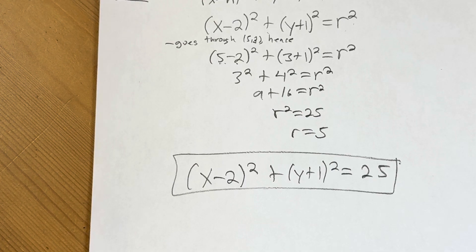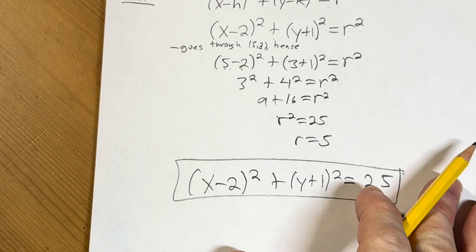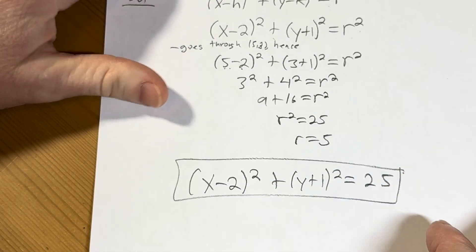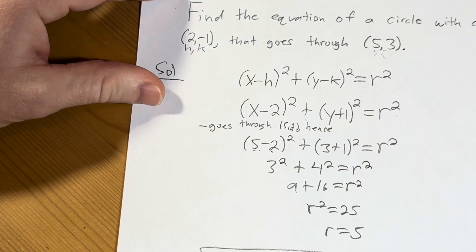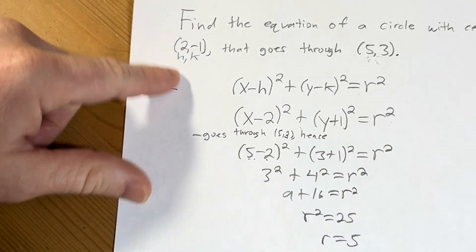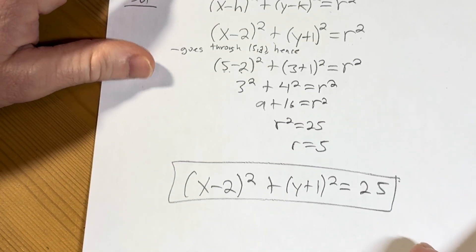Really nice, right? Really beautiful solution, nice and clean. That would be the answer to this problem, right? That would be the equation of the circle with center 2 comma negative 1 that goes through the ordered pair 5, 3.